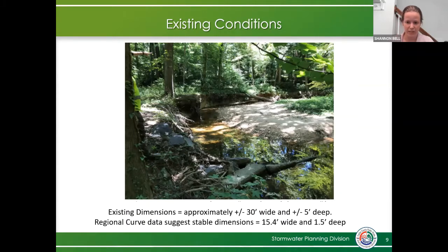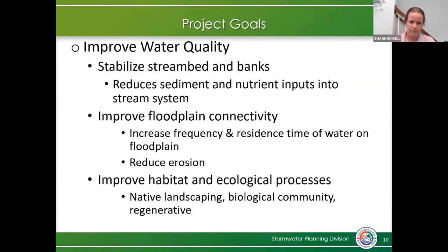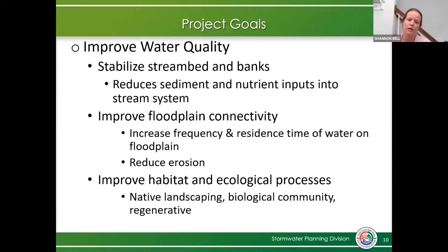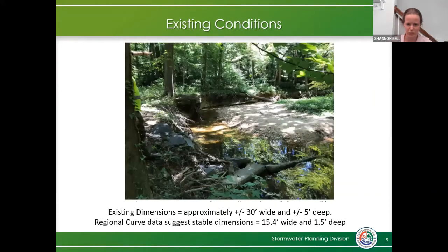Some of our project goals, like I mentioned, are to improve water quality. To do that, we want to stabilize the stream bed and banks, which will help reduce sediment and nutrient inputs into the system. We also want to improve floodplain connectivity — this increases the frequency and residence time of water on the floodplain and reduces erosion. A floodplain is when the stream fills up and spills out into the surrounding land, so it's a larger area than the actual stream channel.